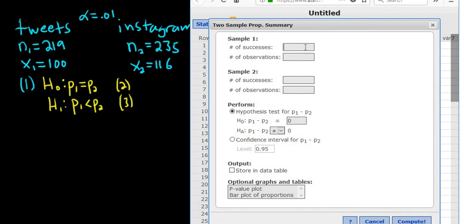Then you enter all of the information. So the successes is 100. Looks like observations is 219. Then you do the same thing for Instagram. So successes is 116. Observations is 235. Good stuff. And we just change this to less than. Always leave it at zero here whenever you're doing two proportions. It's the same thing. If I subtract p2 from both sides here, I end up getting zero on one side. So everything looks okay.